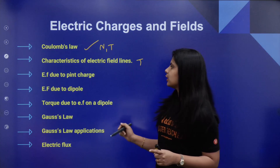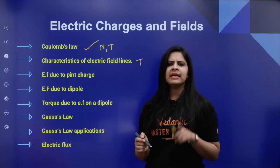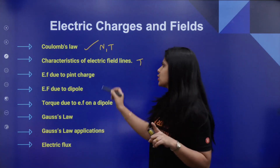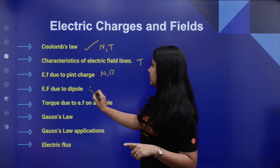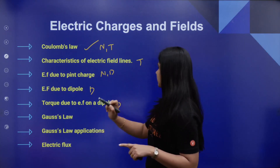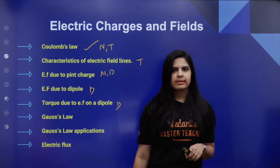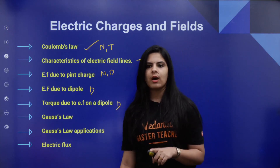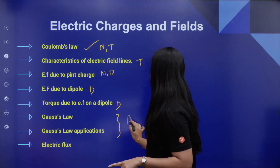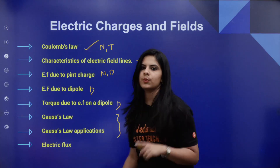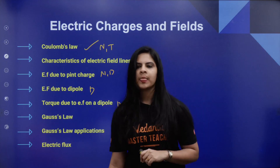Next is Electric Field due to Point Charge — normally numericals and derivations. This is the derivation part. Next is Gauss's Law. Gauss's Law and its applications — derivations and numericals — we are going to expect here in Gauss's Law.